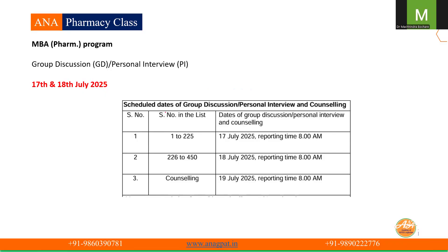This is a tentative slot for the MBA program GD. So rank 1 to 125 — their GD will be on 17th July. Then rank 226 to 450 — their GD will be on 18th July. And then admission will be on 19th July. So MBA admission will happen first.